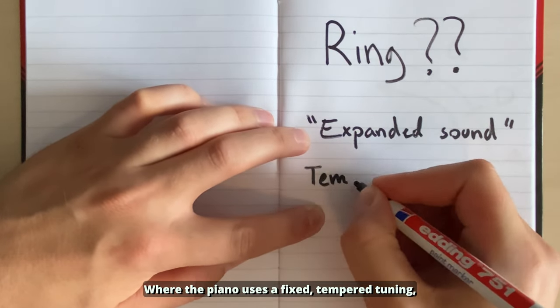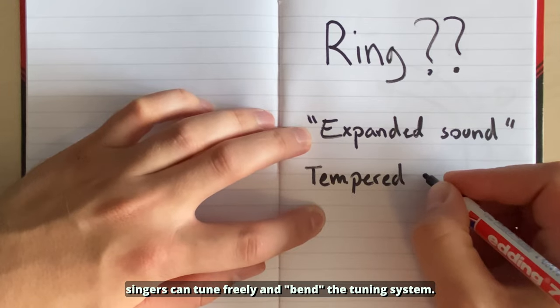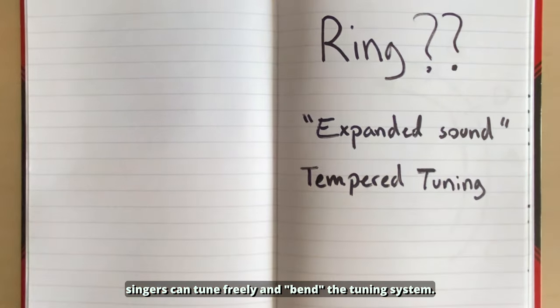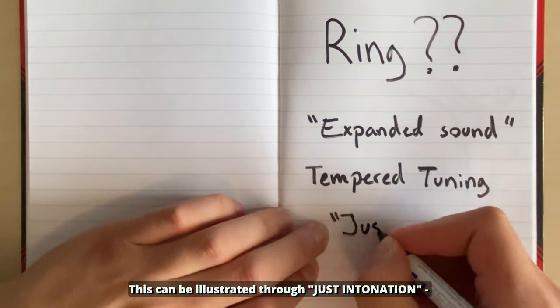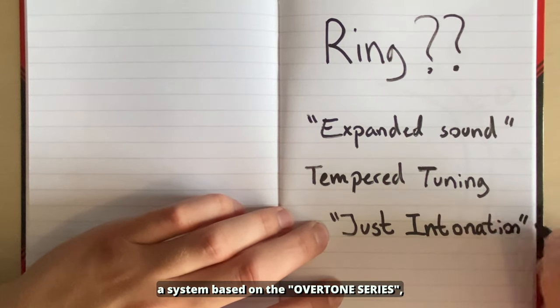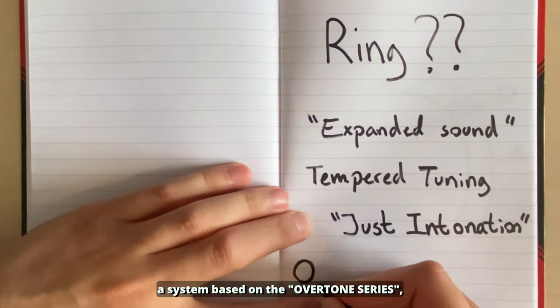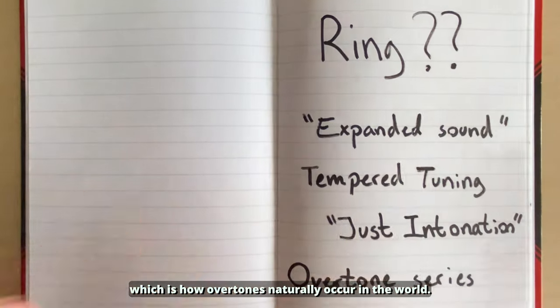Where the piano uses a fixed tempered tuning, singers can tune freely and bend the tuning system. This can be illustrated through just intonation, a system based on the overtone series, which is how overtones naturally occur in the world.